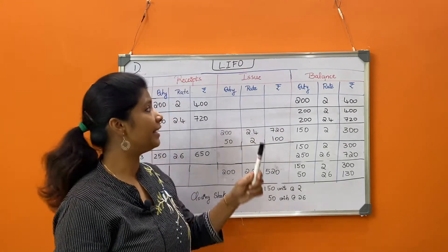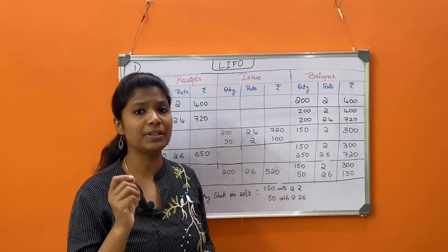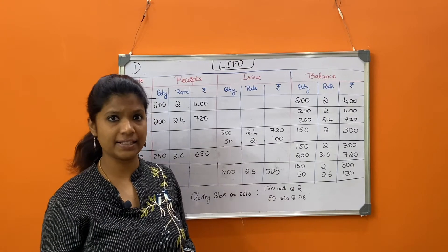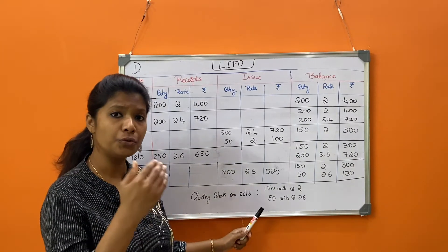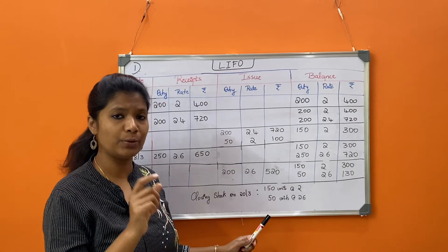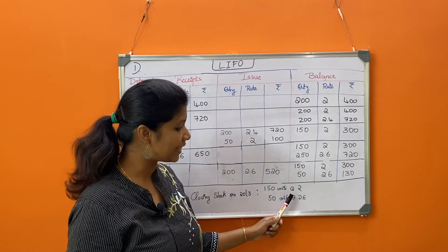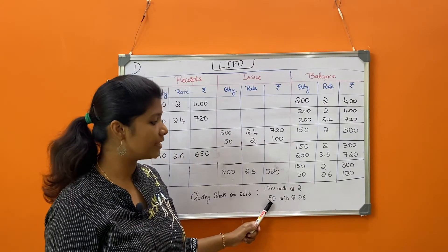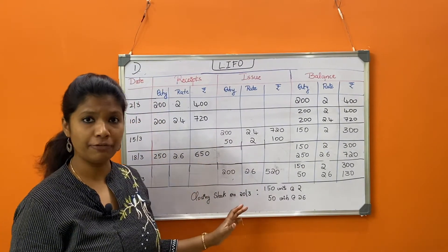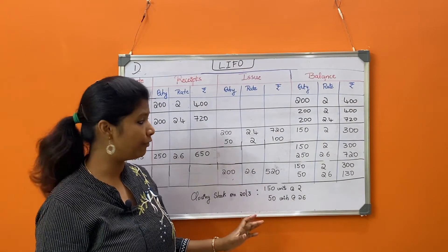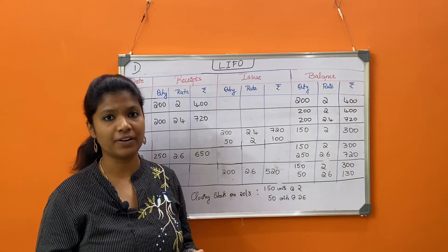Under LIFO, you issue from the last batch; under FIFO, you issue from the first batch. Closing stock as on 20th March under LIFO has two batches: 150 units at rate 2 rupees, and 50 units at rate 2.6 rupees — unlike FIFO where we had only one batch. With this, we complete the first question covering both FIFO and LIFO methods.